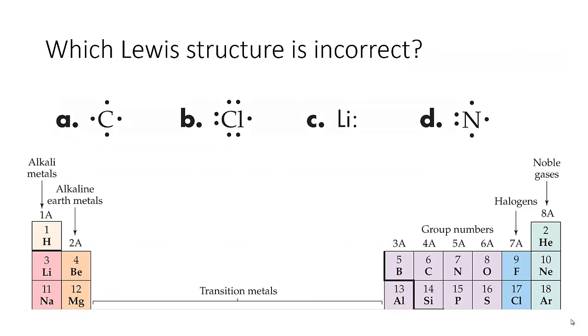Alright, so out of these Lewis structures that you see, one of them is incorrect. So let's think about it, and let's try and figure out which one. So A has carbon. Carbon has four electrons shown. It is in group 4A, which means it does have four electrons, so that is correct. B, chlorine is shown to have seven electrons around its symbol. Is chlorine in group 7A? Yes, so that is also correct.